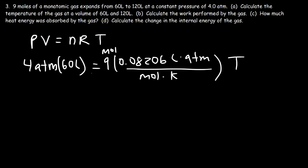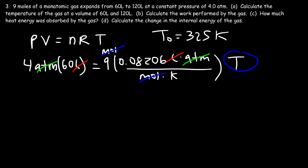Notice how the units match: pressure in atm, volume in liters, moles cancel, so temperature is in Kelvin. It's 4 times 60 divided by 9, then divided by 0.08206. The initial temperature is 325 Kelvin (actually 324.965, rounded to 325).